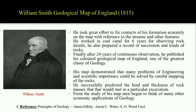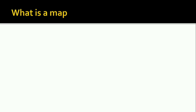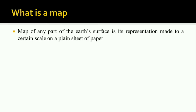Due to his work, there was a large number of growth in the field of geology. This is the map which he prepared and published in the year 1815. So, what is a map? A map of any part of the Earth's surface is its representation made to a certain scale on a plain sheet of paper. You can call anything a map if it shows any portion of the Earth's surface and also includes a scale. If these two criteria come together, then we call it a map.